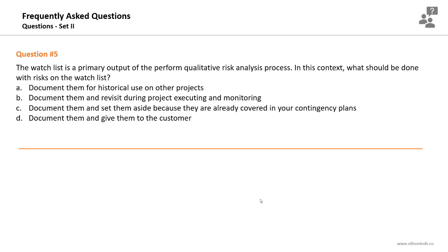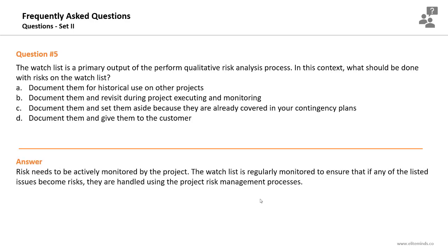The options are: document them for historical use on other projects; document them and revisit during project executing and monitoring; document them and set them aside because they are covered in contingency plans; or document them and give them to the customer. Risks documented in the watch list should be revisited throughout project executing and monitoring. The watch list is monitored regularly to ensure that if any listed risks become issues, they are handled using the project risk management processes.